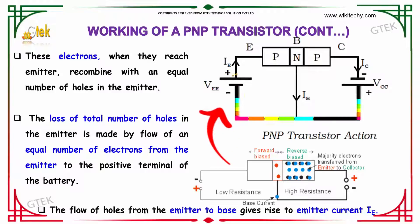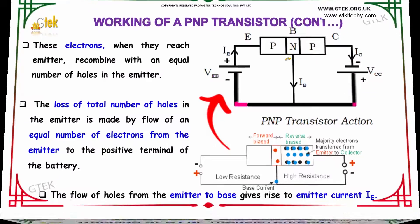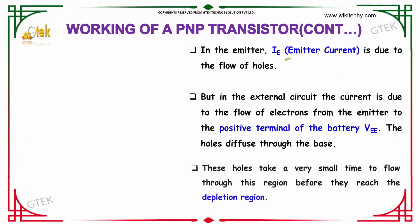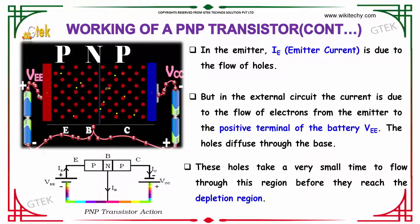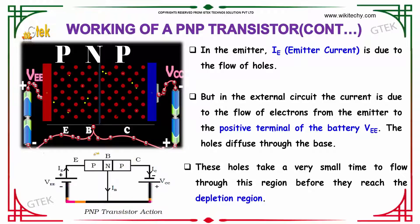The flow of holes from the emitter to the base gives rise to the emitter current IE. In the emitter, IE is due to the flow of holes, but in the external circuit the current is due to the flow of electrons from the emitter to the positive terminal of the battery.